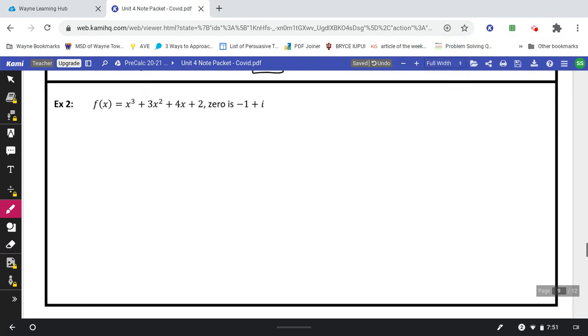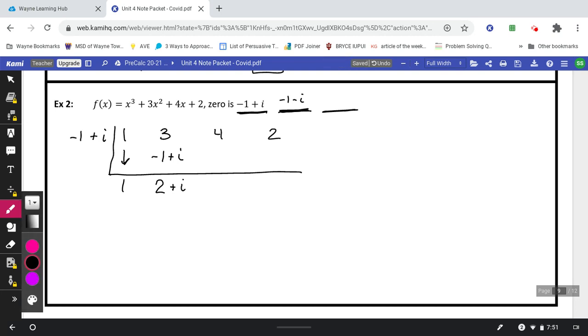Alright. So, for the next problem, example number 2. Notice, again, it's a degree 3. This is one of your zeros. Notice that's a combination. That's a complex number. That's one piece together. It's not a negative 1 and an i. So we'll have two more. Negative 1 minus i. And I'll start with doing the negative 1 plus i on the outside. 1, 3, 4, and 2. The first one's pretty easy to multiply. 1 times anything is that thing. So I'll just bring this down. Combine like terms. 3 plus negative 1 makes 2. And I'll bring down this i.